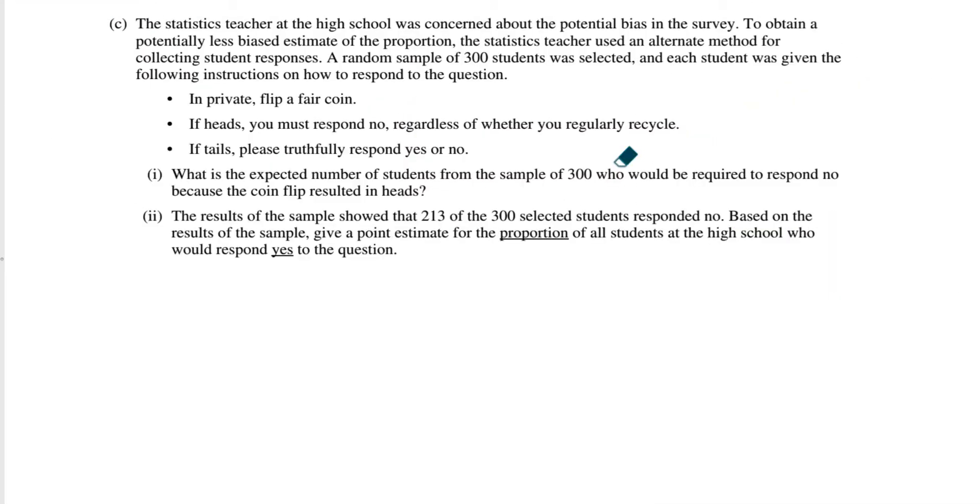So on to part C. Go ahead and pause it if you need to read it. Question one, what is the expected number of students from the sample of 300 who would be required to respond no? Because the coin flip resulted in heads. I like to make a little tree diagram so my brain knows what's going on. So we have two choices. We have heads or tails. And there's a 50% chance of each. If they flip a heads, they're going to answer no, no matter what. And if they get a tails, then it comes down to, you know, they're going to answer truthfully. It might be yes, it might be no.